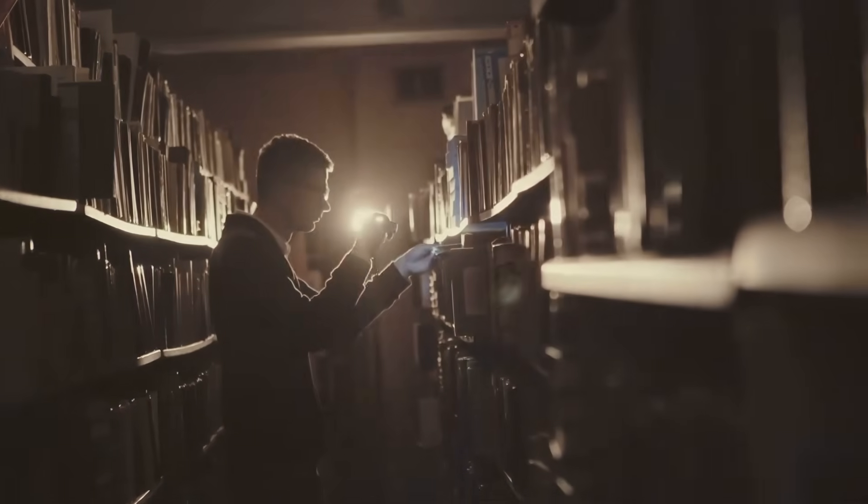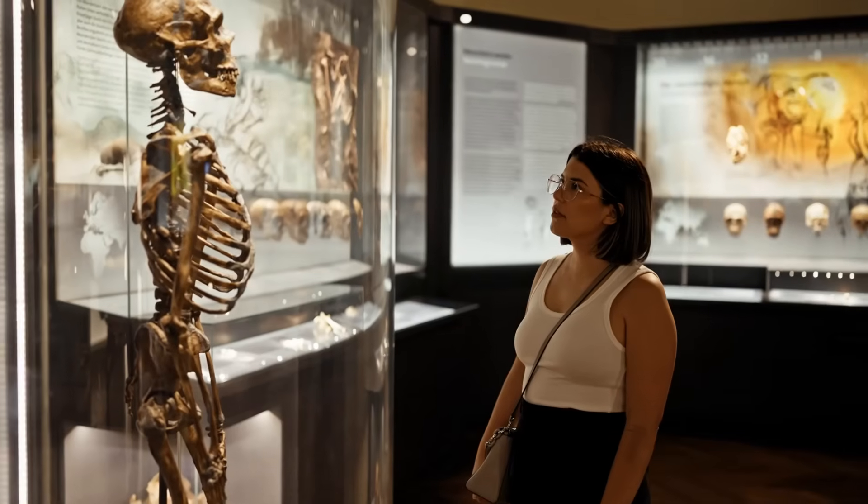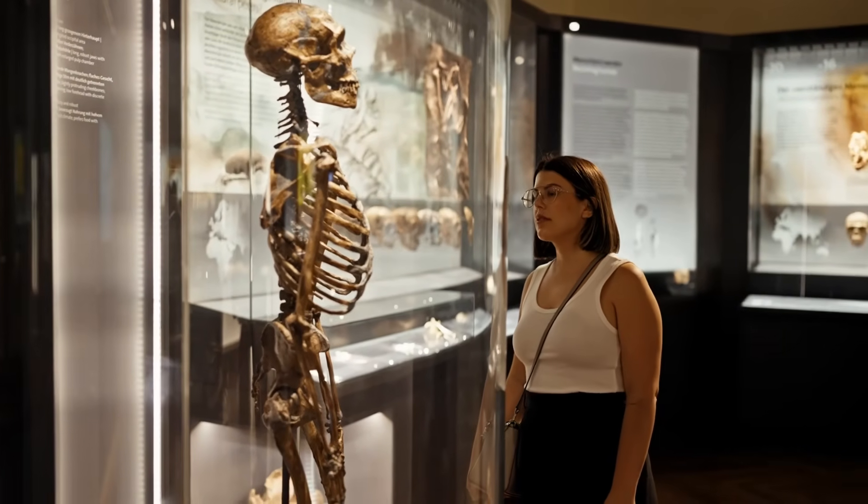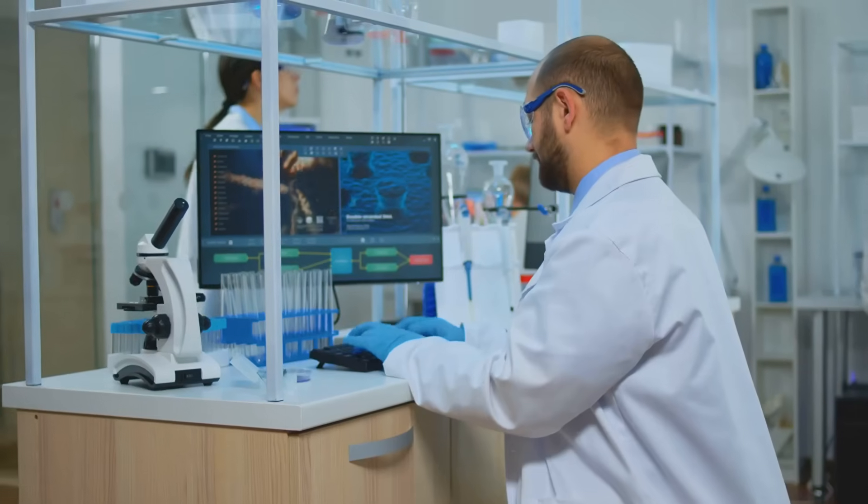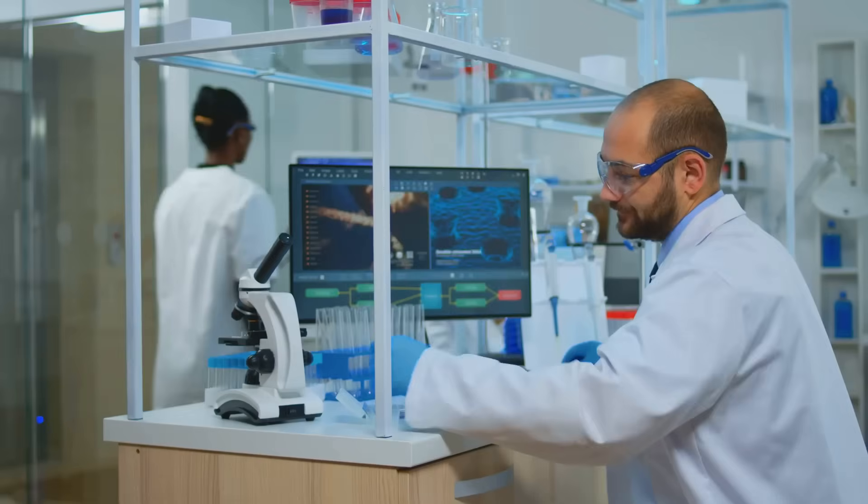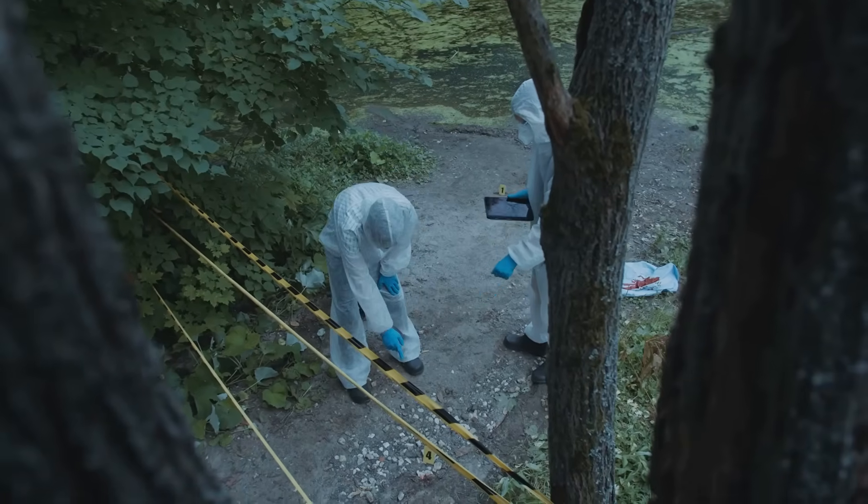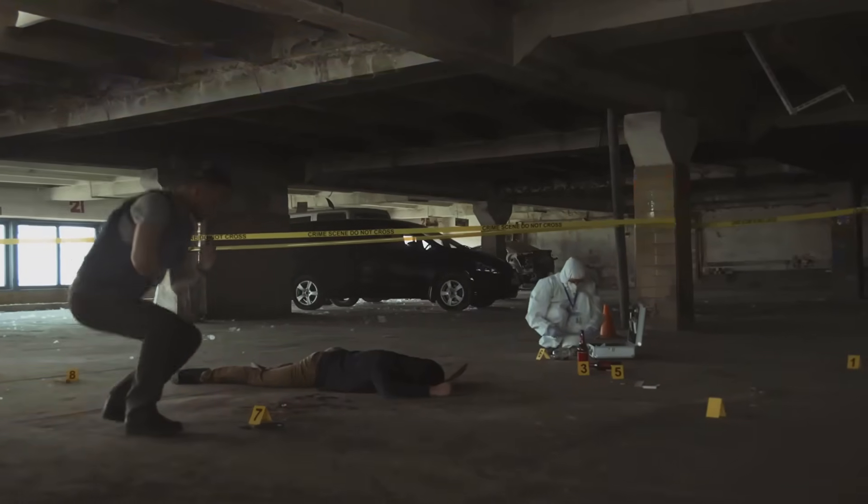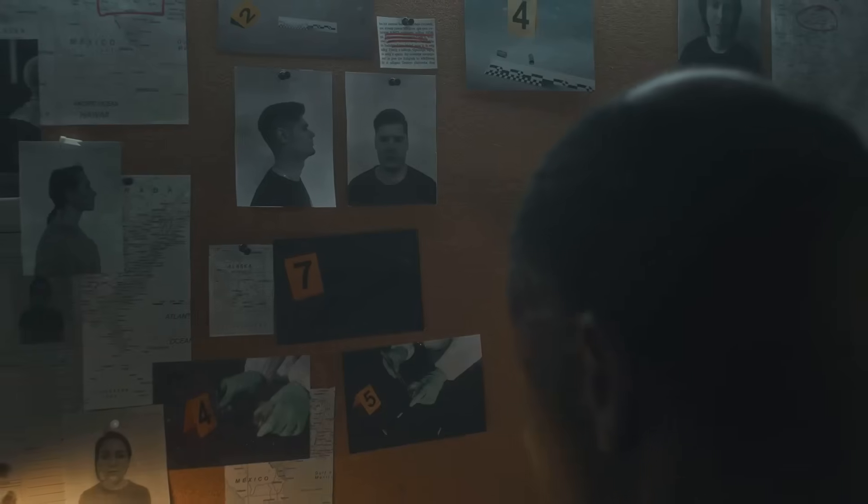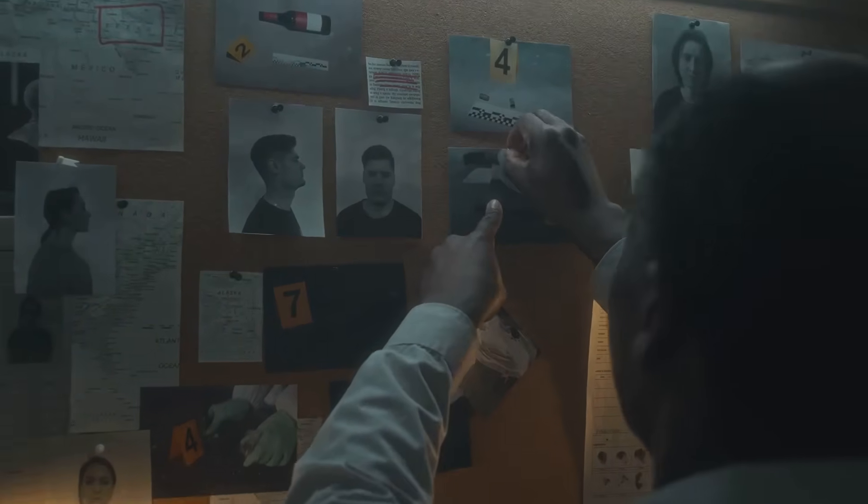The fact of evolution is undeniable, observed and confirmed through countless lines of evidence. The theory of evolution, constantly tested and refined, provides the framework for understanding the mechanisms driving this change. Think of it like a crime scene investigation. The fact of the crime is undeniable. There's a body, a weapon, a disturbed scene. The detective's job is to develop a theory supported by evidence to explain how and why the crime occurred.